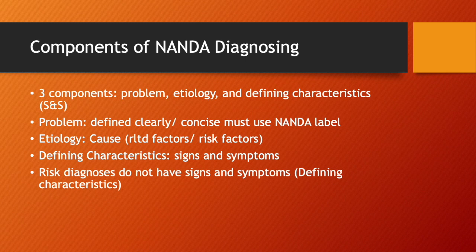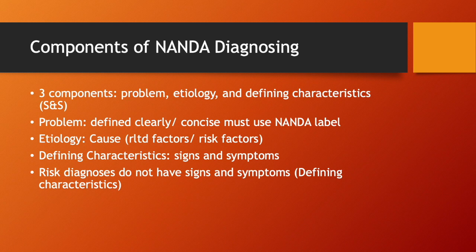There are three components of NANDA diagnosing: the problem, the etiology (which is the cause of the problem), and defining characteristics (which are the signs and symptoms). The problem must be defined clearly and concisely using a NANDA label. The etiology uses the phrase 'related to.' With a risk diagnosis, risk factors serve as the etiology, and there are no defining characteristics — only two parts — because the problem doesn't exist yet and therefore cannot have signs and symptoms.